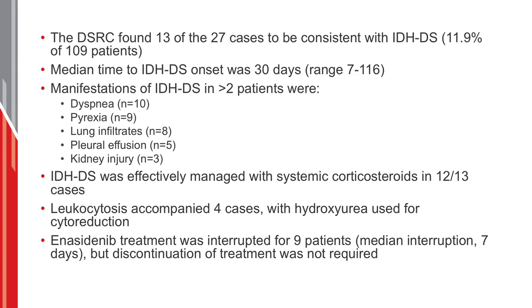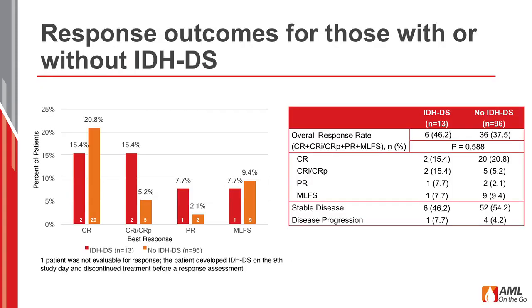IDHDS was effectively managed with systemic corticosteroids — 12 of 13 cases were successfully managed this way. Most commonly, dexamethasone was used for this purpose. Leukocytosis can accompany IDH differentiation syndrome; when it occurs, hydroxyurea can be used for cytoreduction purposes. Enasidenib treatment was ultimately interrupted for nine of these patients with a median interruption period of approximately seven days; however, discontinuation of treatment was not required.